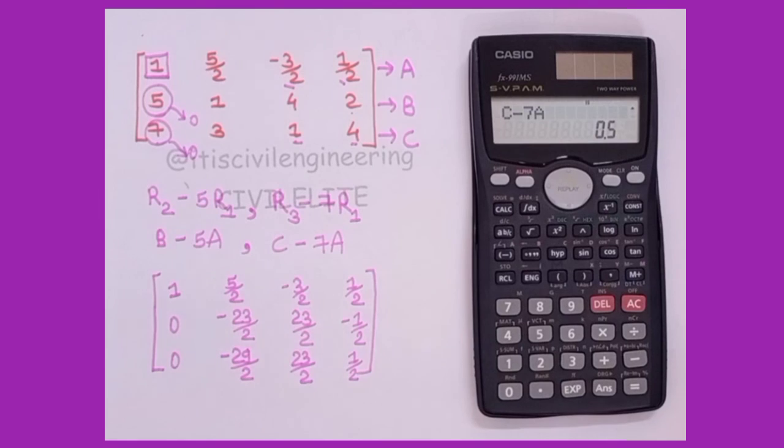So this is how you can perform row transformations using calculator. It's not possible in fx82ms. Thank you.